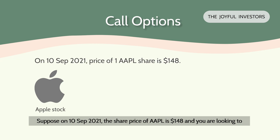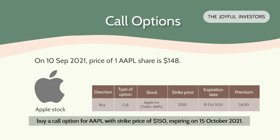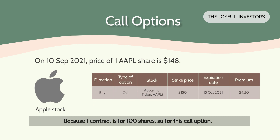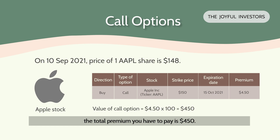Suppose on 10 September 2021, the share price of Apple is $148 and you're looking to buy a call option for Apple with a strike price of $150, expiring on 15 October 2021. Because one contract is for 100 shares, the total premium you have to pay for this call option is $450. Which means that currently, the value of this call option is $450.